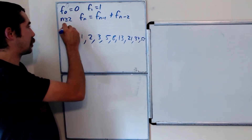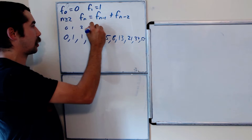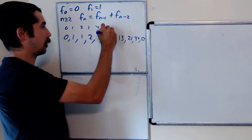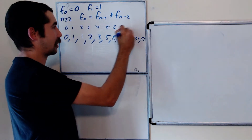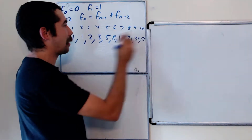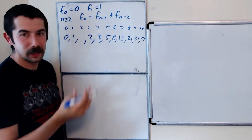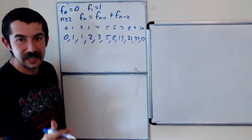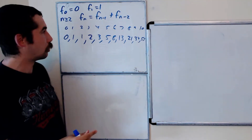So this is the 0th, 1st, 2nd, 3rd, 4th, 5th, 6th, 7th, 8th, 9th, and 10th Fibonacci numbers. I'm labeling these because I want to show you something pretty neat, and this is what we're going to prove.